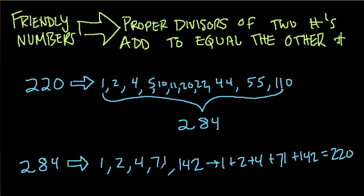So since we added up these proper factors and we get 220, and we added up these proper factors, we get 284. That means 220 and 284 are friendly to each other. They're friendly numbers.